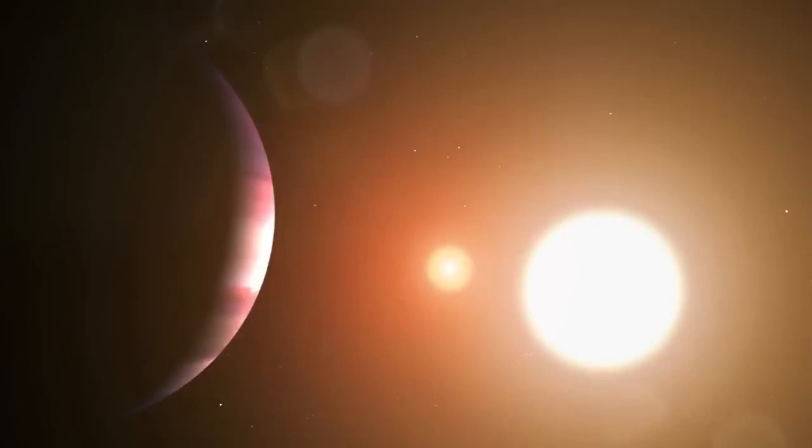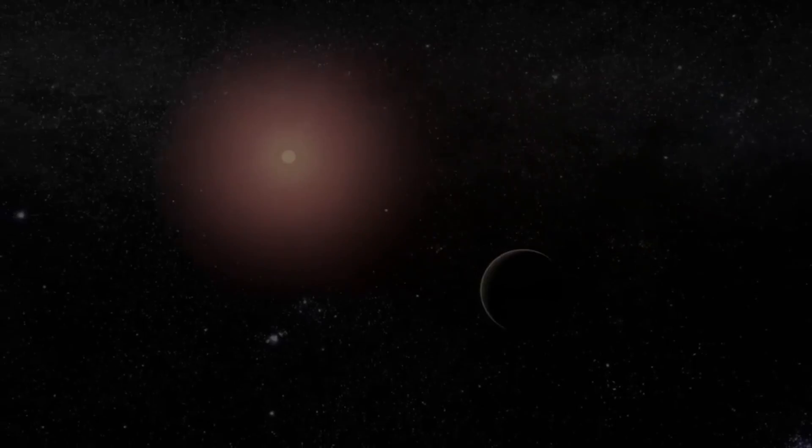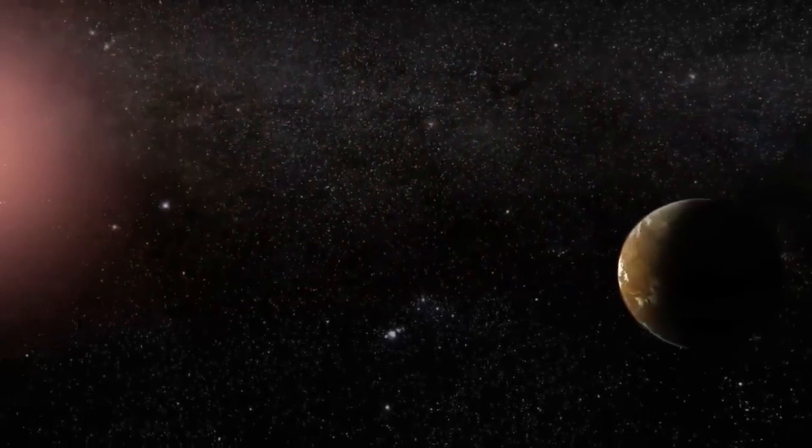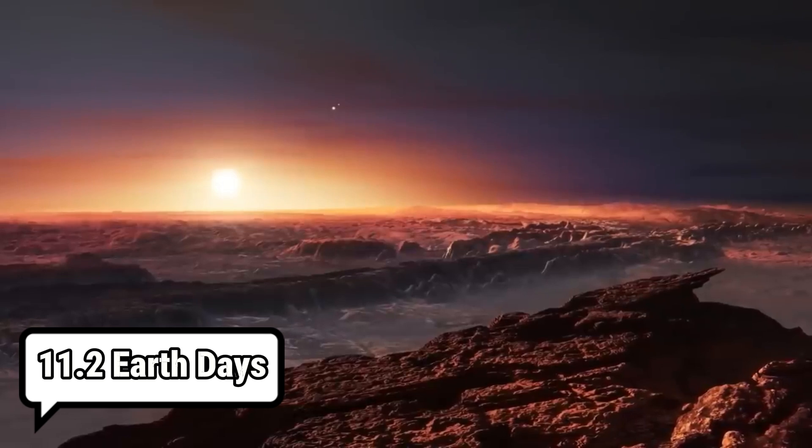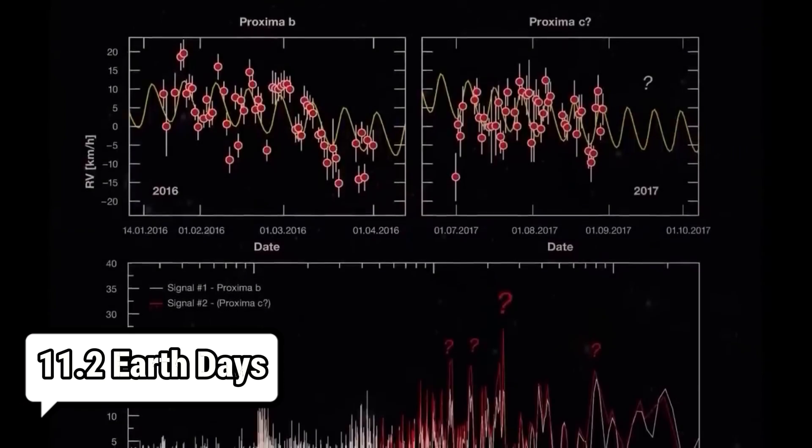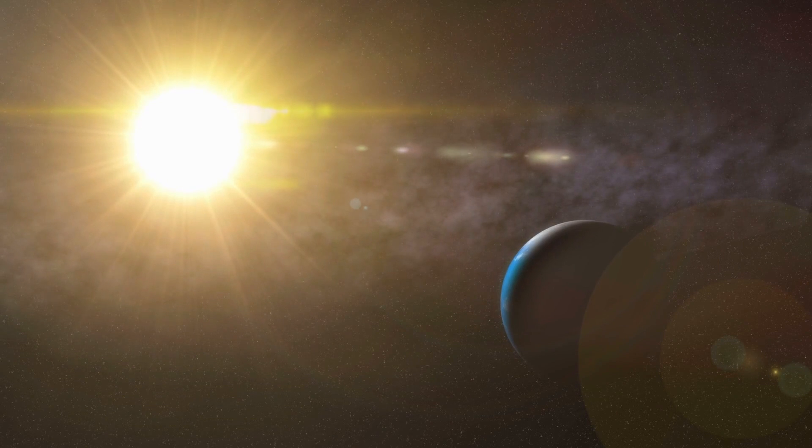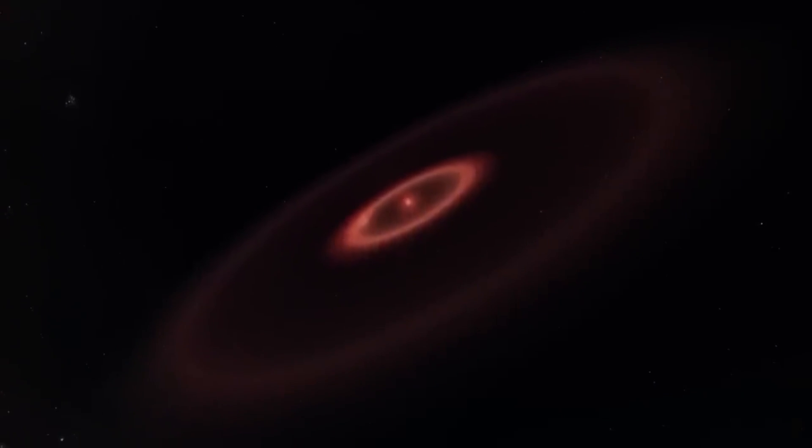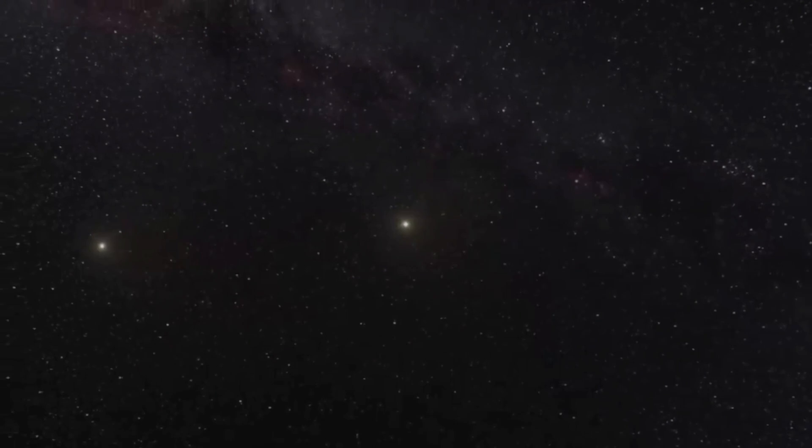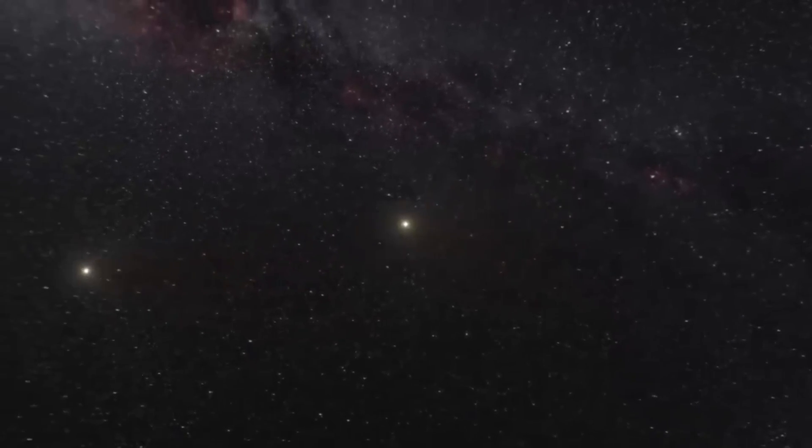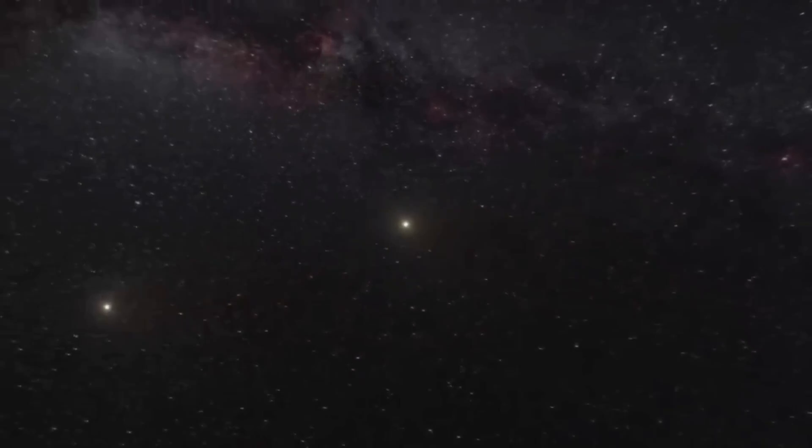Proxima Centauri b stands out as a unique puzzle in this extensive array of celestial bodies. Its year is remarkably short, lasting only 11.2 Earth days, and it orbits its star about 20 times closer than Earth does to the Sun. Consequently, one side of the planet is always bathed in daylight, while the other lingers in perpetual darkness, contributing to the planet's mysterious and potentially wondrous nature.